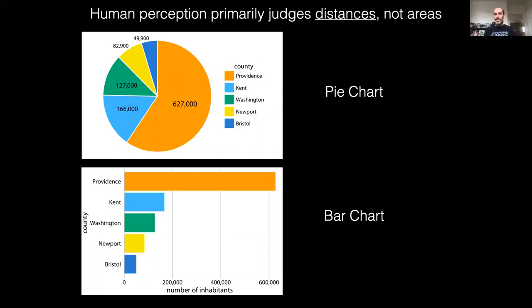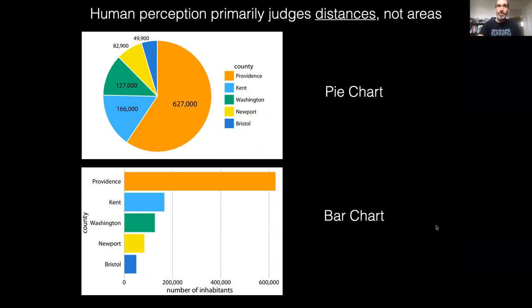we are at judging area. Here we have the same information represented as a pie chart versus a bar chart, and most of us are going to be much more sensitive to judging the differences among groups within the bar chart, because our visual systems are much better at judging length than area.